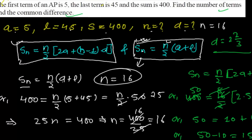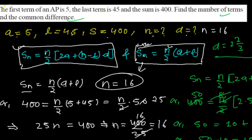To summarize: in any problem involving the sum of n terms of an arithmetic progression, there are five variables total. You will almost always be given three of them and need to find the remaining two. Keep this in mind and you can solve any such problem. In the next video we'll do a slightly different type of problem. I hope you enjoyed this video and learned something. Bye bye!